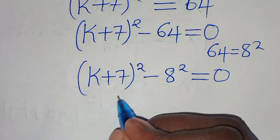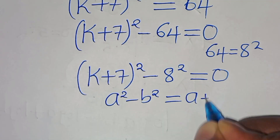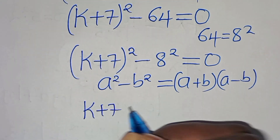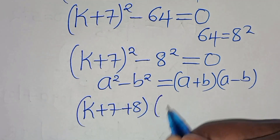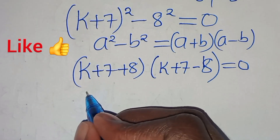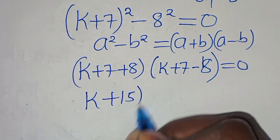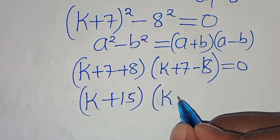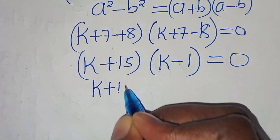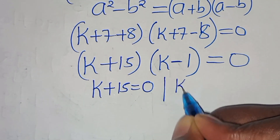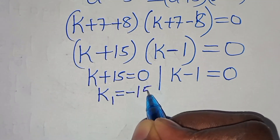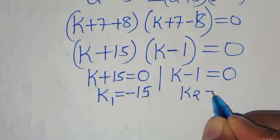This expression is in the form a² - b² = (a + b)(a - b). Applying this, we get (k + 7 + 8)(k + 7 - 8) = 0, which is (k + 15)(k - 1) = 0. Therefore k + 15 = 0 gives k₁ = -15, and k - 1 = 0 gives k₂ = 1.